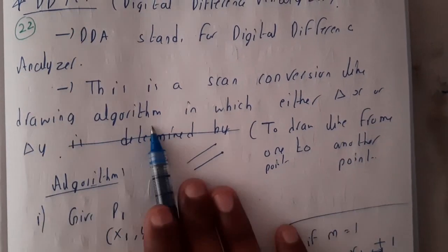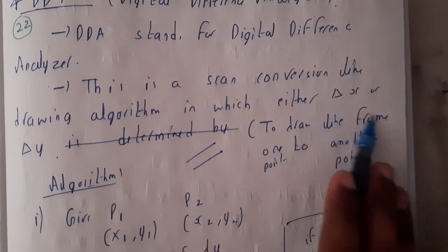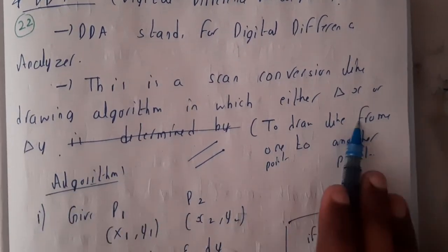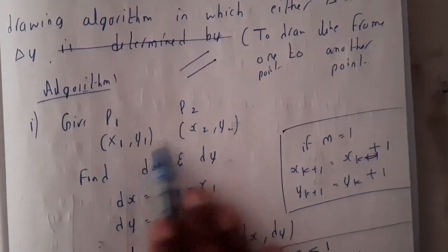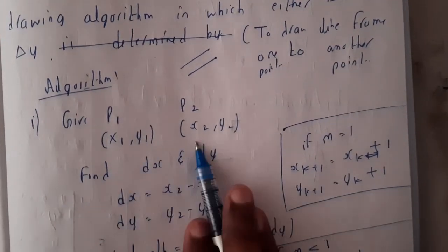DDA stands for Digital Difference Analyzer. This is a scan conversion line drawing algorithm in which either delta x or delta y to draw a line from one point to another point. The algorithm is: P1, P2 will be given, x1, y1, x2, y2.